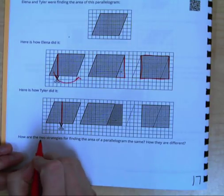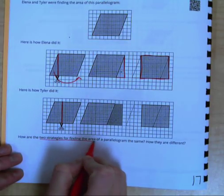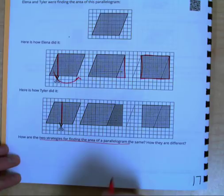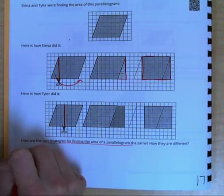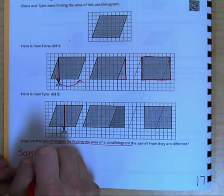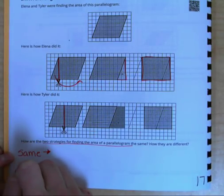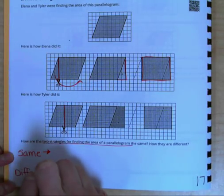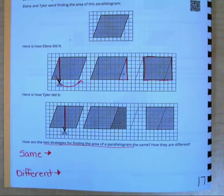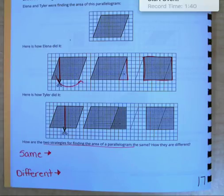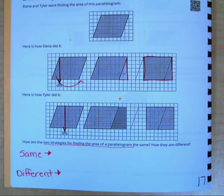Okay, these are two different strategies for finding the area of a parallelogram. I want you to come up with one thing that is the same between their two strategies, and one thing that is different between their two strategies. So right here, you will need to pause the video while you think of one thing that is the same and one thing that is different.